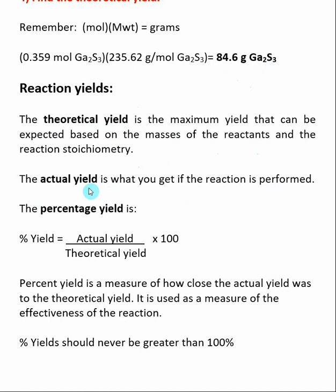Theoretical yield is the maximum yield based on the masses of the reactants and the reaction stoichiometry. Actual yield is what you get from the reaction — in order to get an actual yield, you literally go into the lab, run the reaction, isolate the product, and weigh it. What we want to do now is calculate a percent yield, which says how closely did my actual yield get to my theoretical yield, and this is a measure of the effectiveness of a reaction.